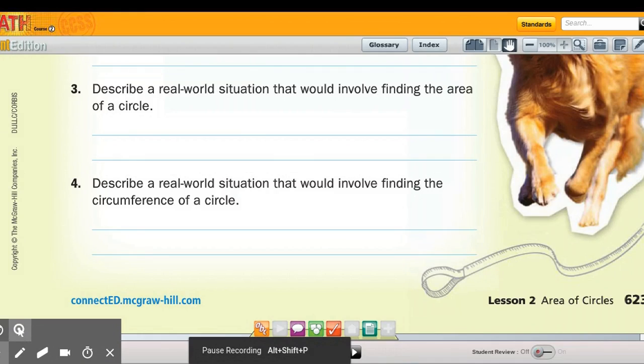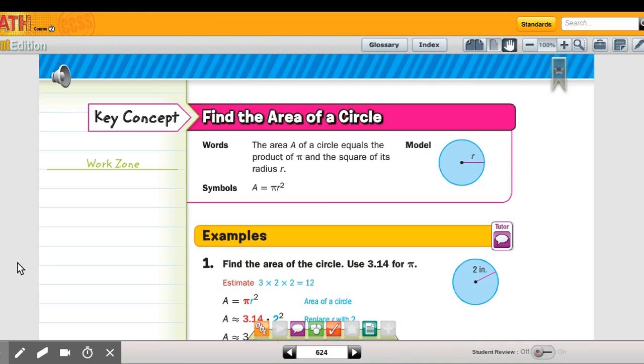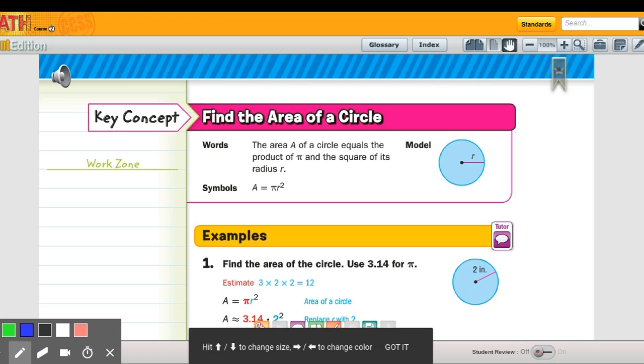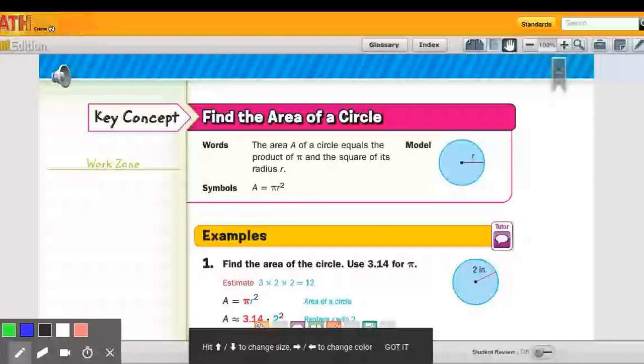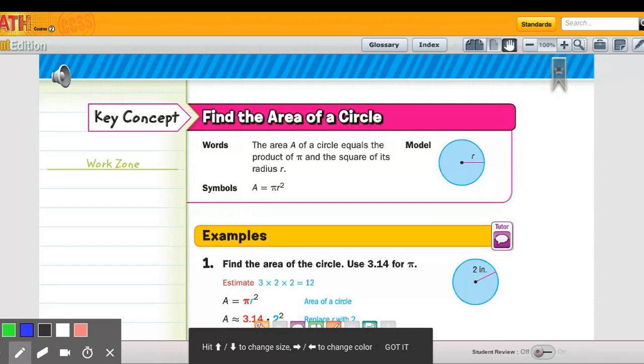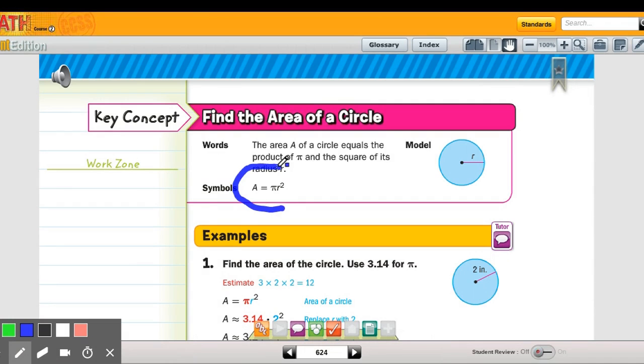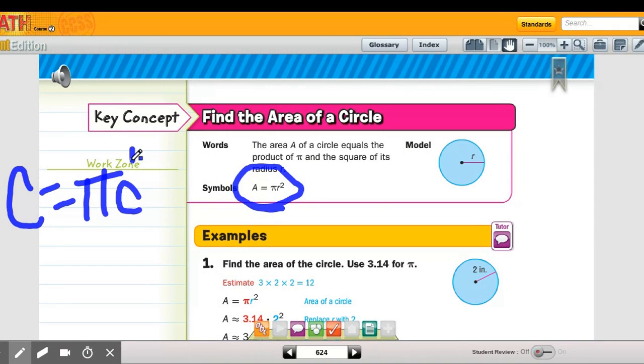So looking at area of a circle, this video actually I'm redoing because I lost part of it. Area of a circle, finding out that carpeting for where the dog is, is pi, our good friend pi, times the radius squared.